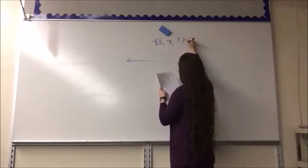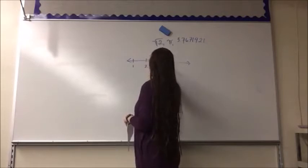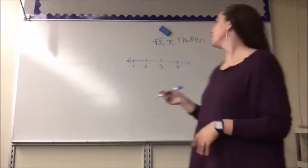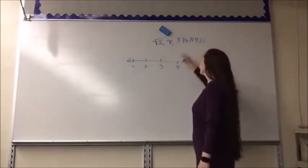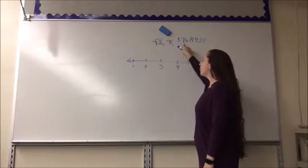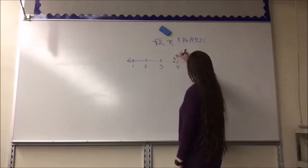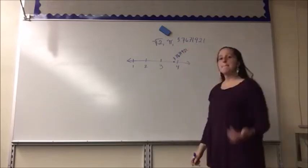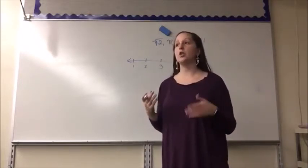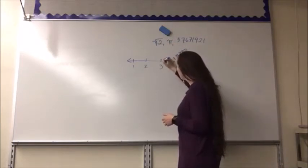On my number line from one to four, 3.7671921 is the easiest to place — it goes on forever, but I look at the whole number part. It's between three and four, closer to four, so it goes about here. Pi we approximate as 3.14, which is the standard approximation used without a calculator, so pi sits closer to three on the number line.